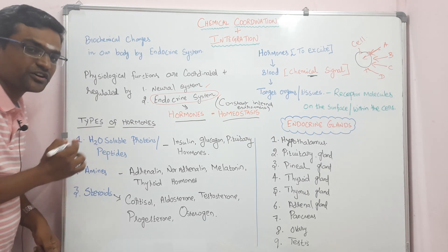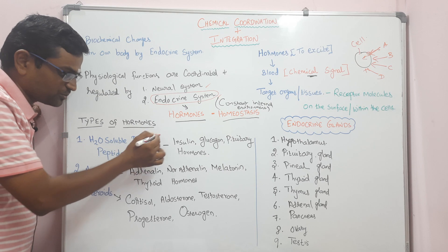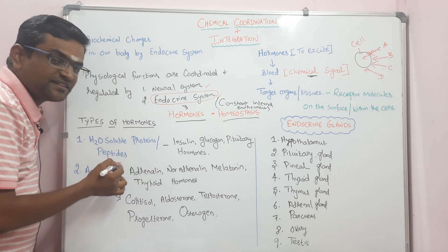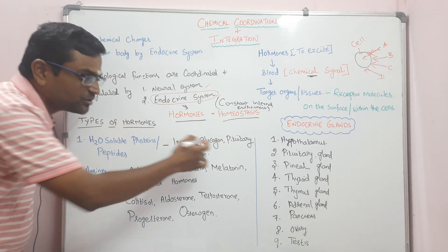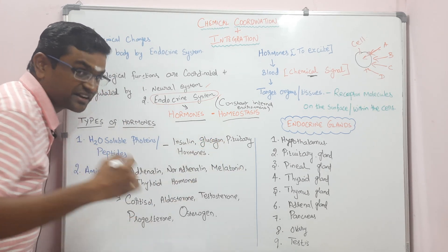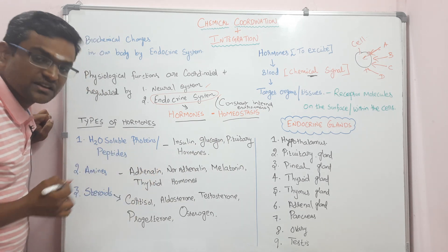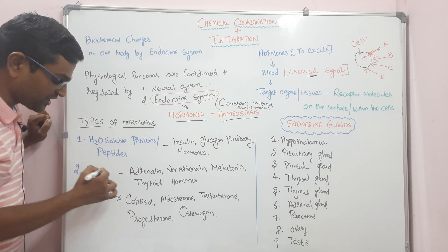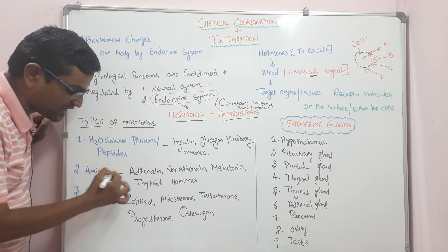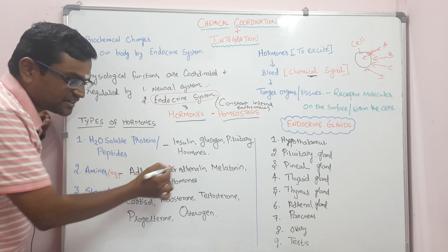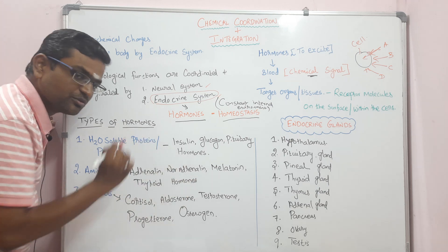The types of hormones: first, water-soluble hormones, which are proteins or peptides — for example, insulin, glucagon, and pituitary hormones, which I will explain in the next class. Second, amines, which contain an NH2 group in their chemical formula — examples include adrenaline, noradrenaline, melatonin, and thyroid hormones.